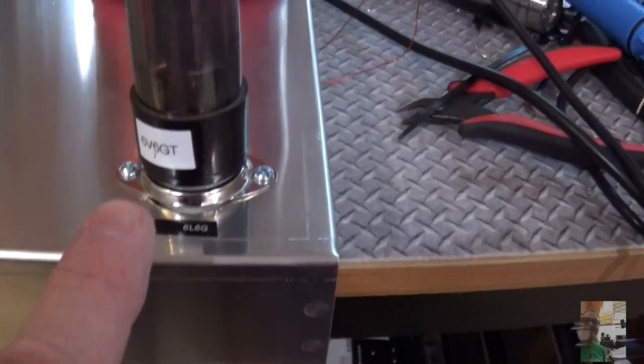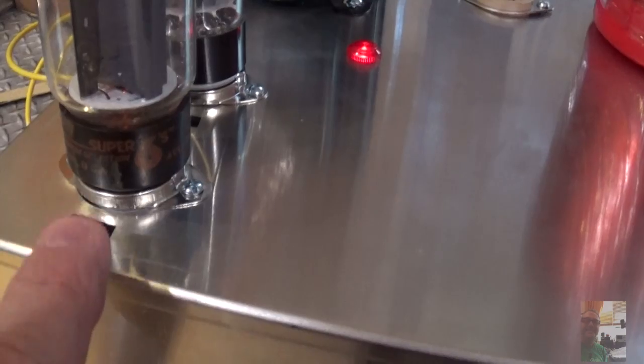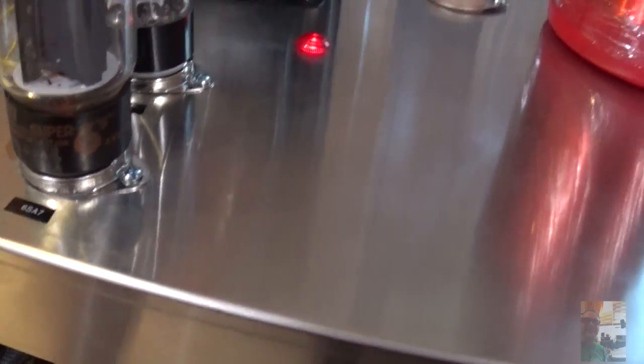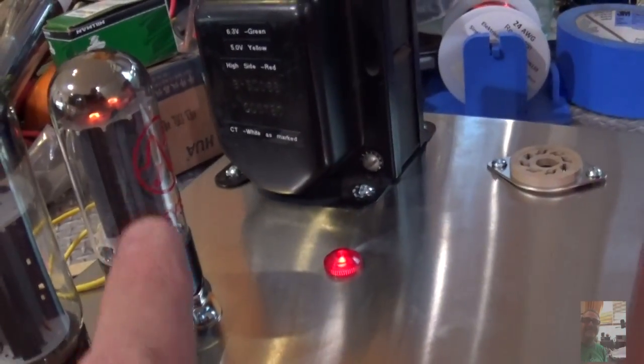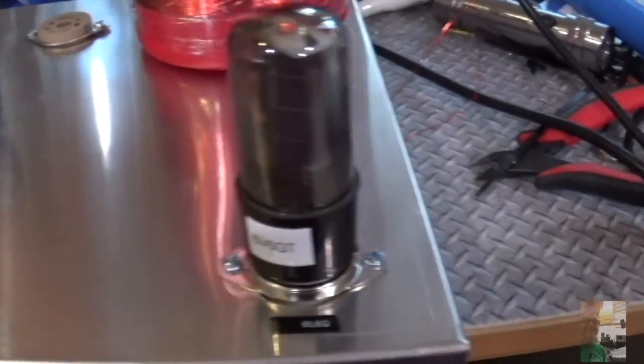Now these aren't the right tubes, this is a 6V6 and a 6L6, I gotta dig that out. And this is not the 6SA7, it's actually another 6L6. But that is a 5Y3 rectifier. So I've got everything wired correctly and I've got a power cord.